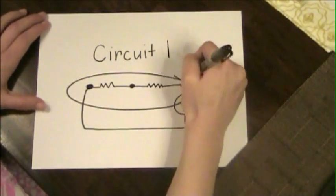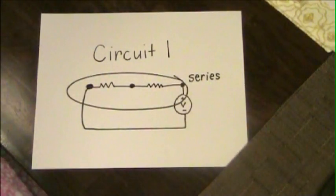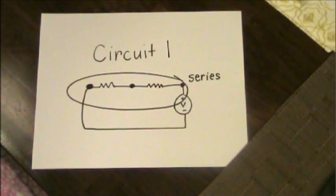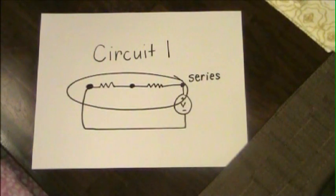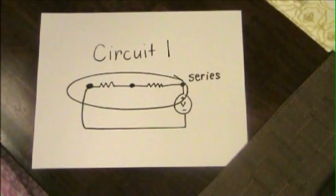Now we're going to simulate this circuit using water instead of electricity. We put a two-liter bottle at each of the black dots of the circuit to visualize the change in water level. The voltage in this diagram is related to the total water height in the two-liter bottles of our water circuit.